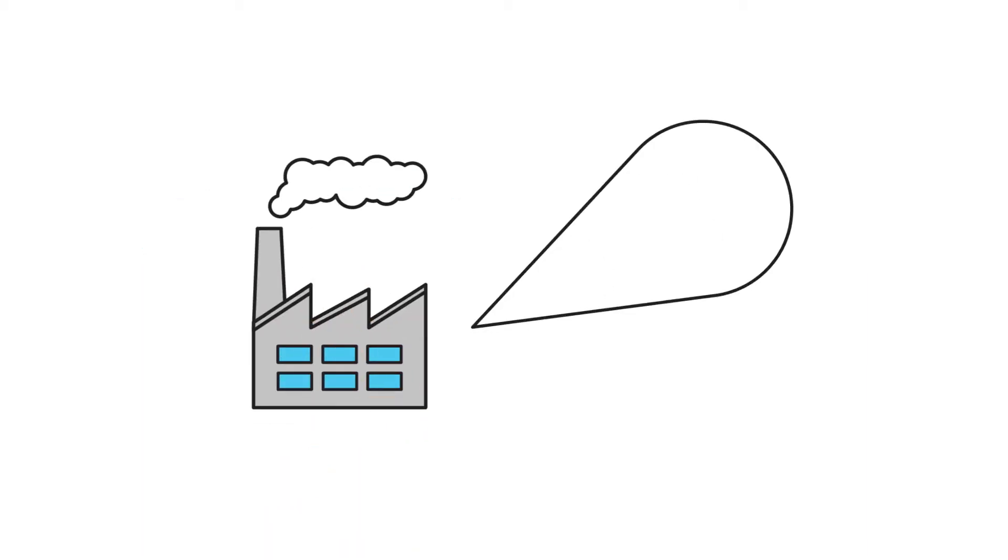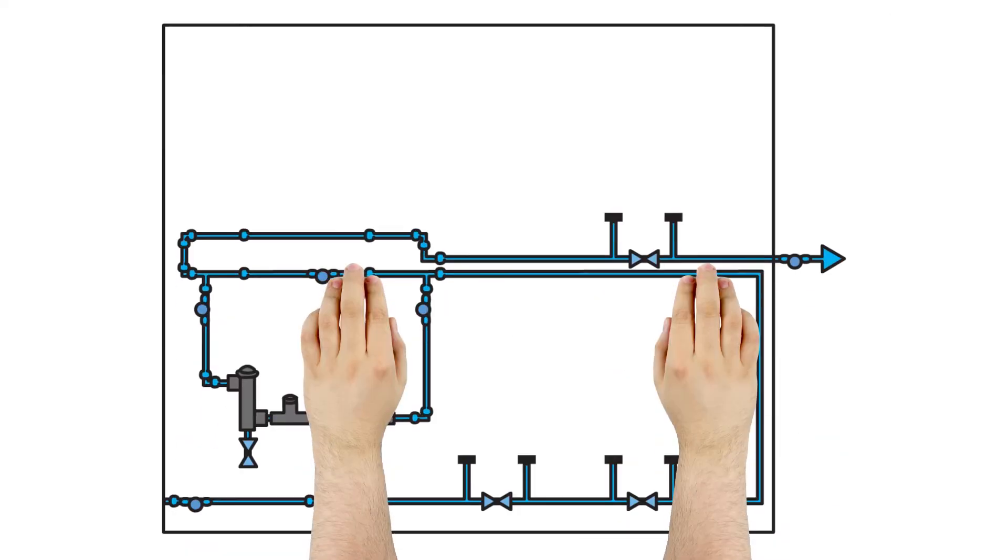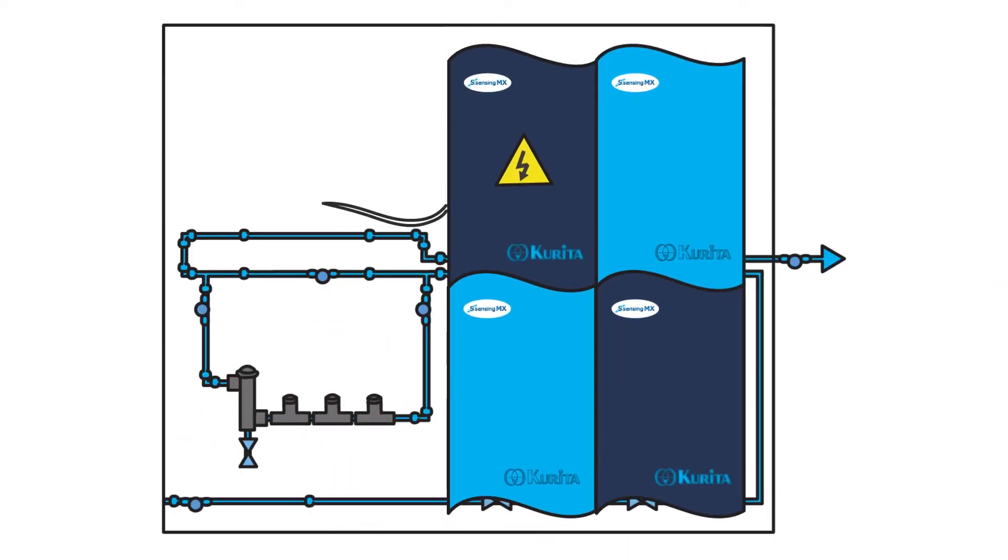In plant operation, various systems for cooling water applications are needed. Kurita's S-sensing matrix is the innovative solution.